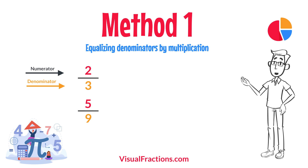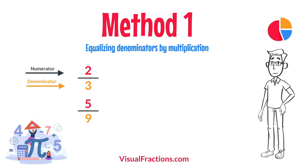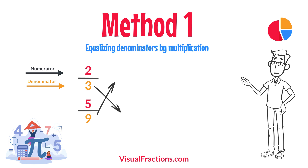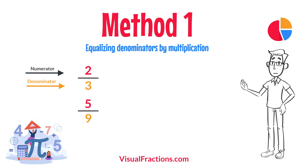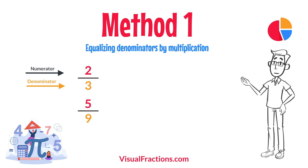First, let's equalize the denominators by multiplying each fraction's numerator and denominator by the other fraction's denominator. This method works by using the denominators of each fraction to create a common denominator, allowing us to compare the fractions directly.